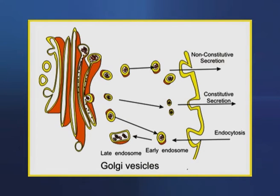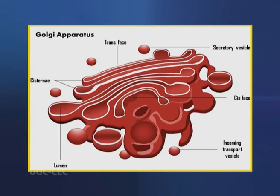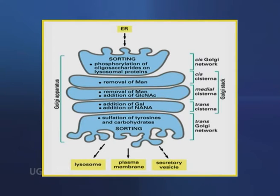Second, the Golgi complex is the major sorting center of the cell. Proteins proceed from the Golgi complex to lysosomes, secretory granules, or the plasma membrane according to signals encoded within their amino acid sequence and three-dimensional structures. The Golgi complex is differentiated into a cis compartment, the receiving end closest to the ER, a medial compartment, and a trans compartment which exports proteins to a variety of destinations.